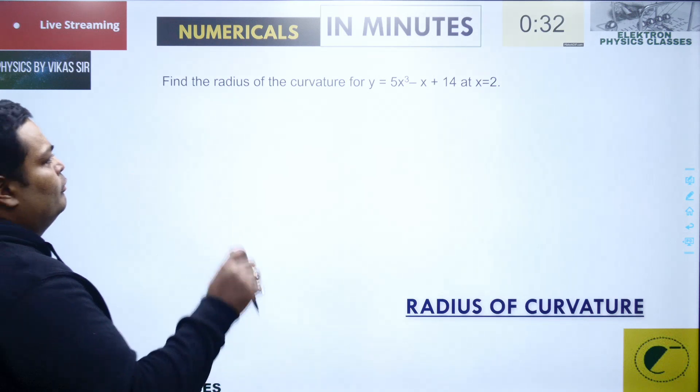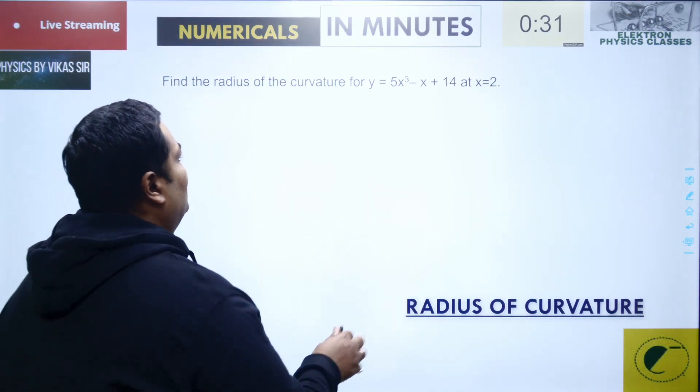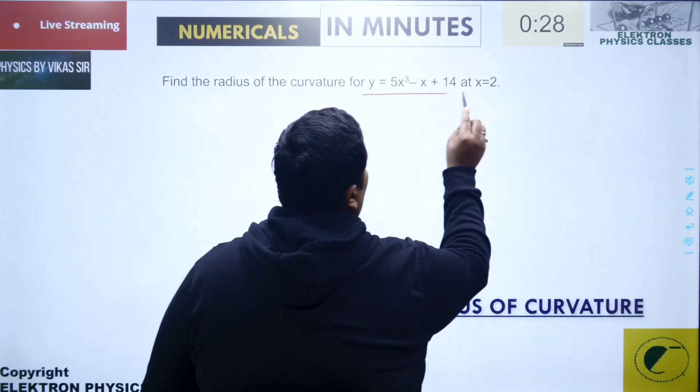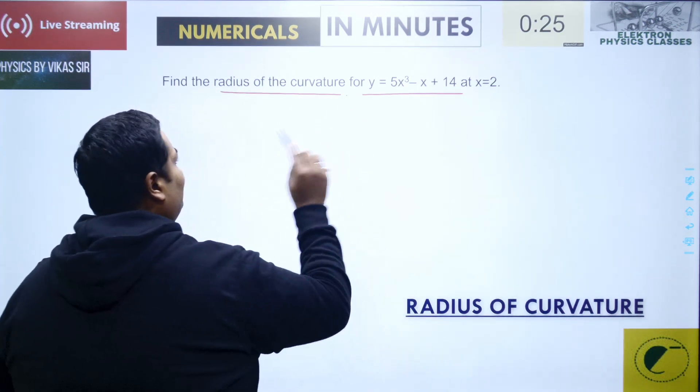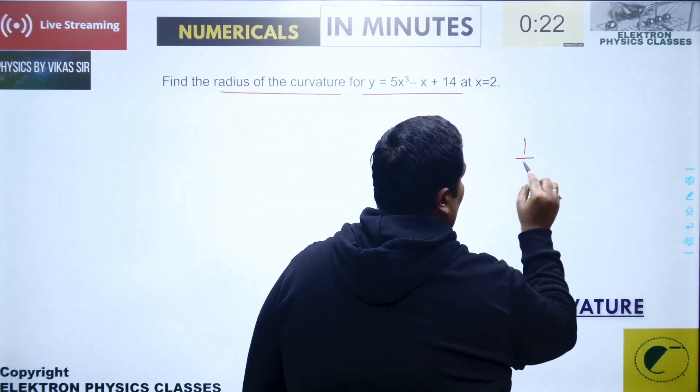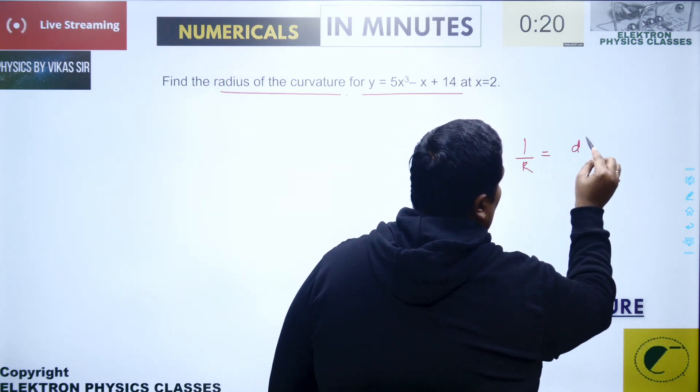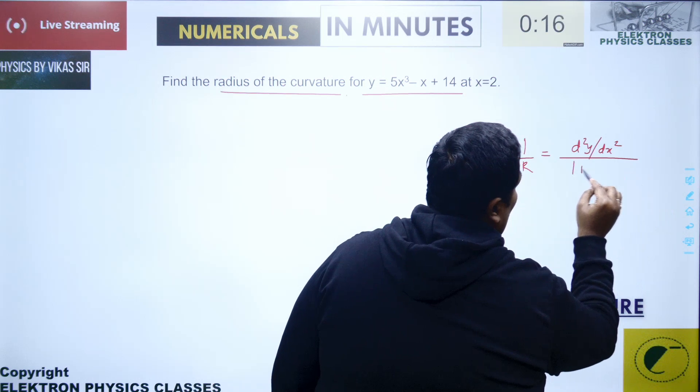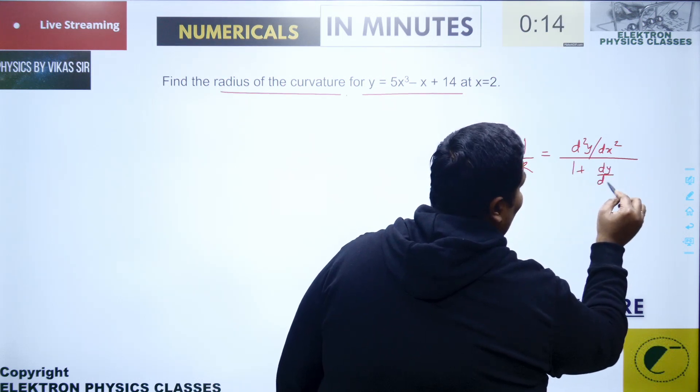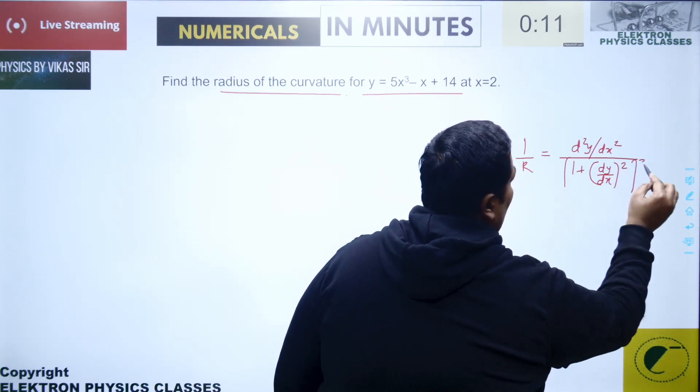We have the question for a trajectory equation given to us as y equals 5x cube minus x plus 14, and we need to find the radius of curvature. I have the expression for the radius of curvature as 1 upon r equals d square y upon dx square divided by 1 plus dy upon dx whole square power 3 by 2.